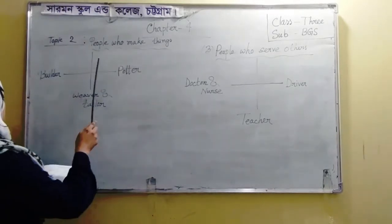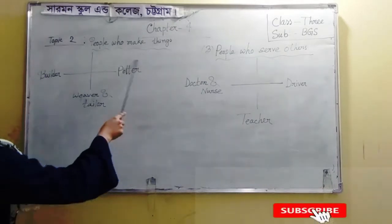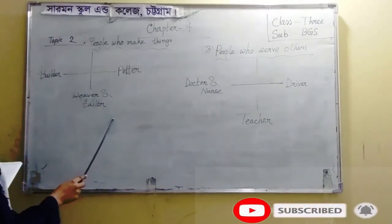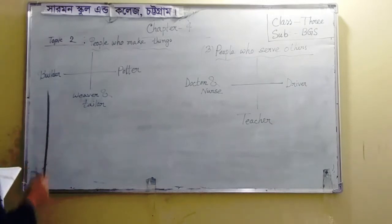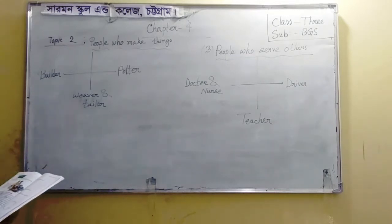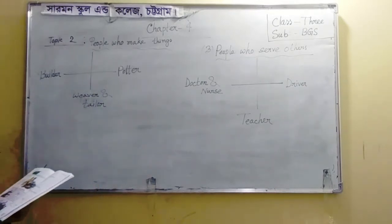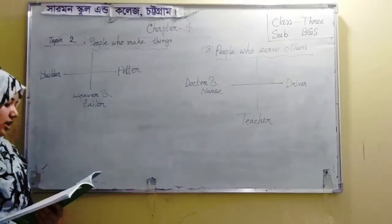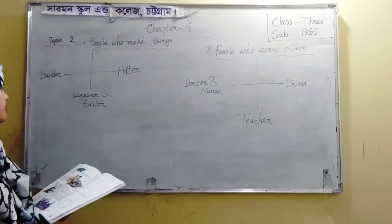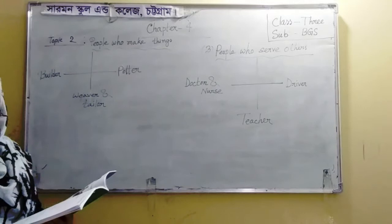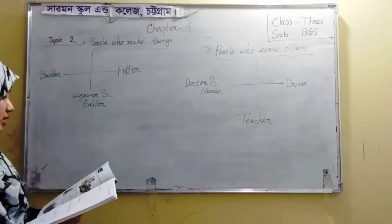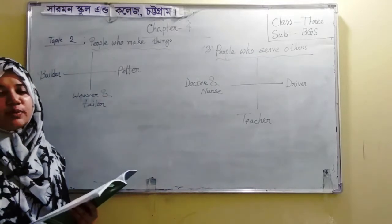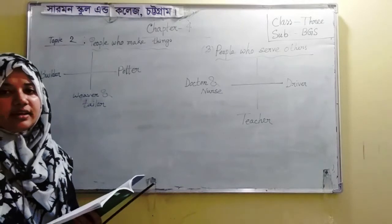Look students, you can see a potter, a tailor, and a builder. Who is a potter? A potter uses clay to make pots, pitchers, and jars, and we use these things at home. Clay means soft earth.